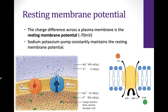Before we look at how a nerve cell gets excited, we need to understand what it's doing at rest. So when a nerve cell is at rest, it has what's called a resting membrane potential. We saw this in the muscle cells — they have the same resting membrane potential. Both of these types of cells are excitable.